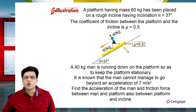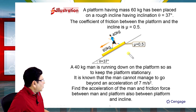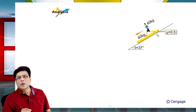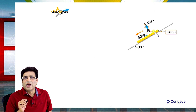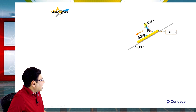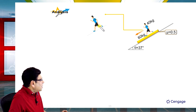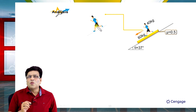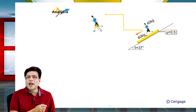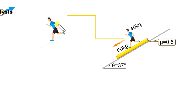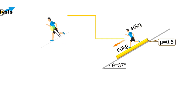Let's analyze the situation. First, let us consider the free body diagram of the man. We resolve the weight components parallel and perpendicular to the incline. Parallel to the incline: Mg sin theta = 40 × 10 × sin 37°. Since sin 37° = 3/5, this gives 400 × 3/5 = 240 N.